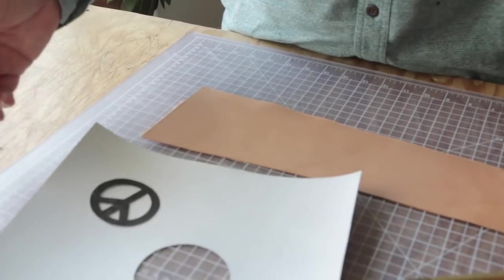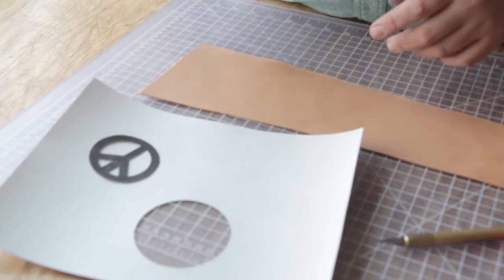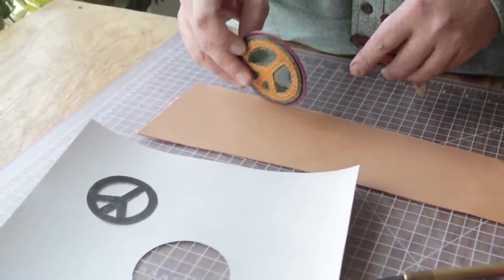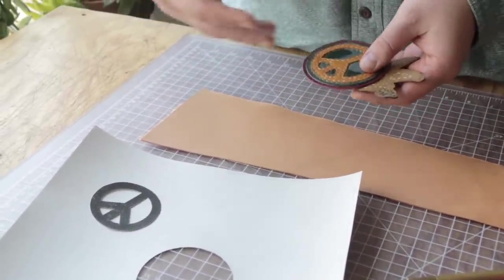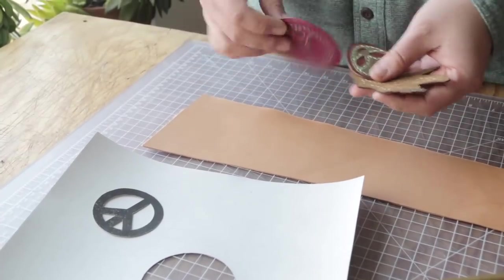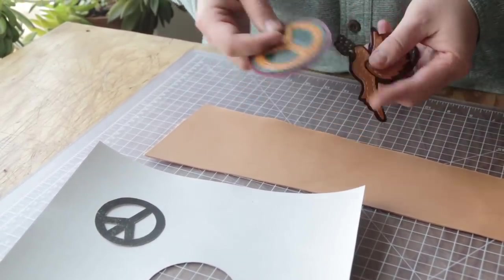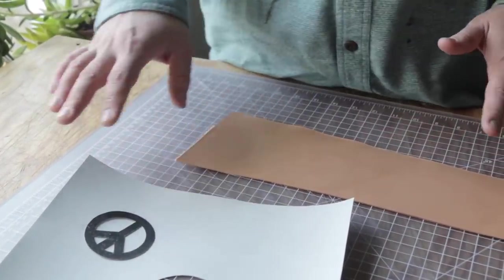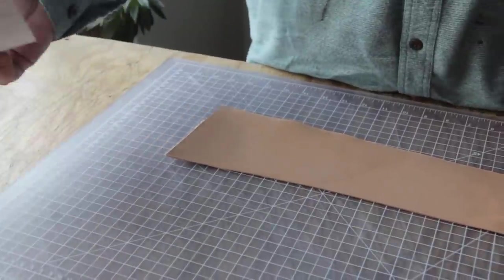There's really not much to it. The one thing is you can add velcro to the back of your leather patches so that if what you're putting the patch on needs to go in the wash, you can take the leather patch off because saddle leather doesn't really like the washing machine or the dryer. This one's just going on a backpack so we'll be good to go.